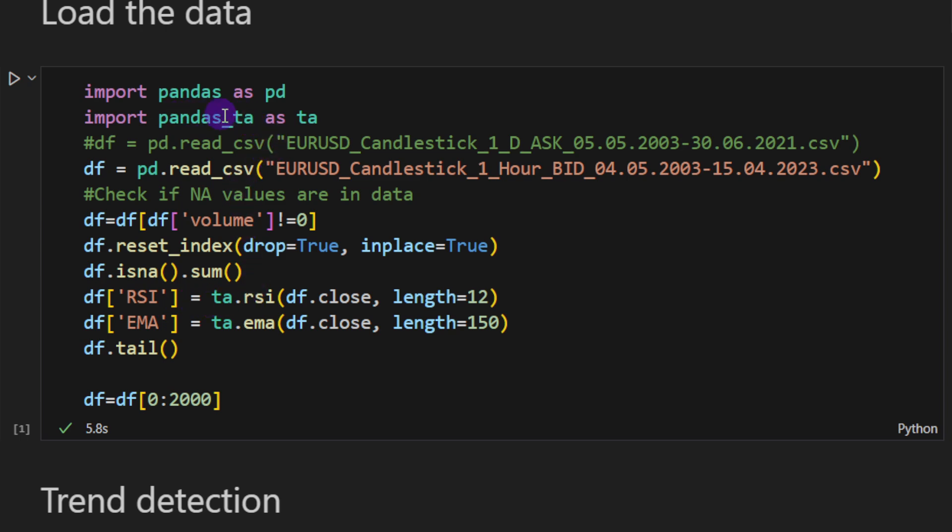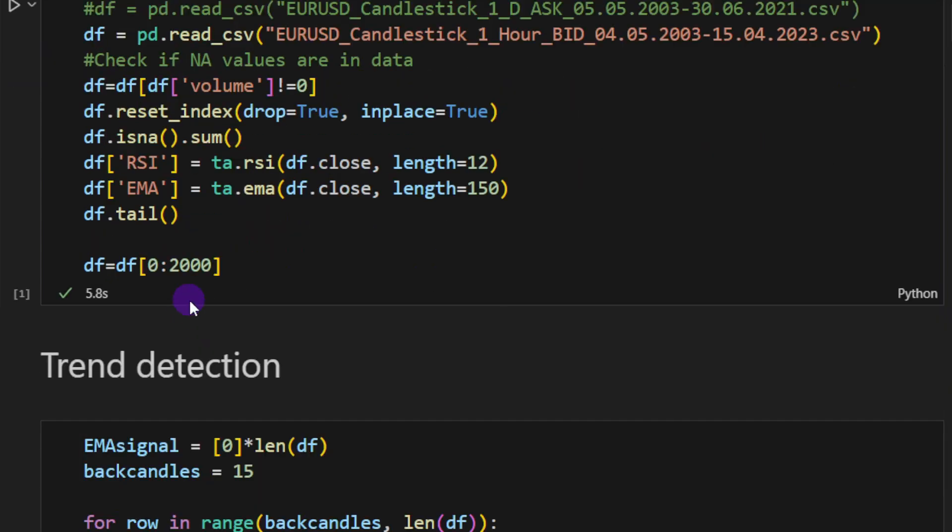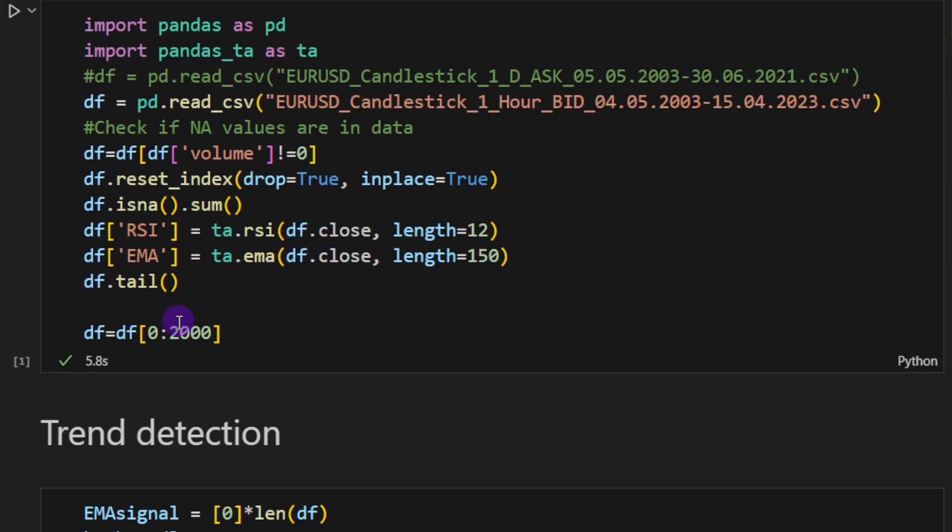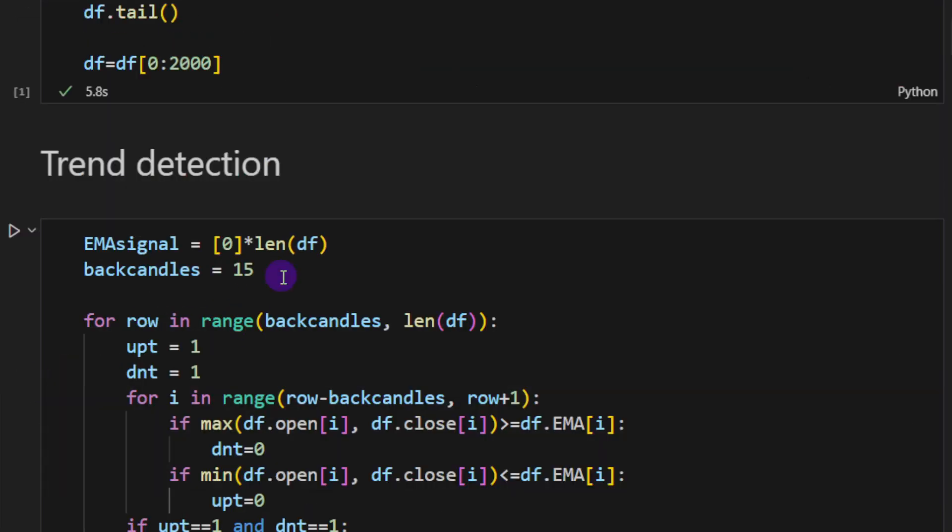This is our Jupyter notebook file. We're going to load the data—EUR/USD one-hour dataframe from 2003 to 2023. I'm filtering the zero volume candles where we didn't have any trades, so the market was closed. Then I'm computing two technical indicators using the pandas technical analysis package: the RSI and the moving average.